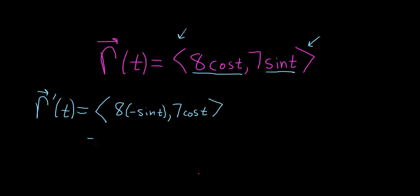And I guess we should definitely rewrite it. It's 8 times negative sine, so it's really just negative 8 sine of t, comma, and then 7 cosine of t.